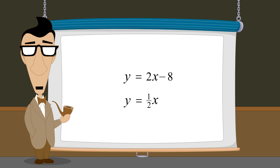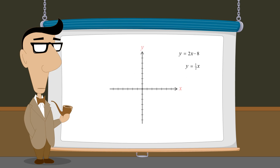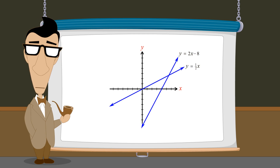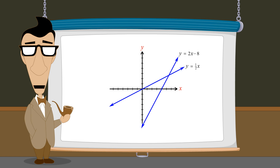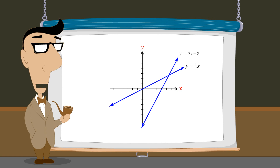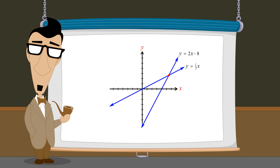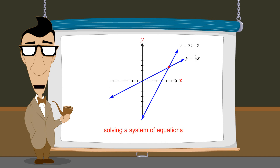We know that the set of solutions for each equation is visually represented by its graph, and each equation's graph is made up of an infinite number of points, with the x and y coordinates of each point representing one particular solution. Any point which lies on both graphs — in other words, any intersection point of the two graphs — therefore represents a solution which is common to both equations.